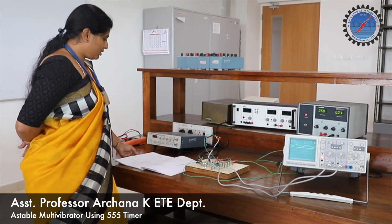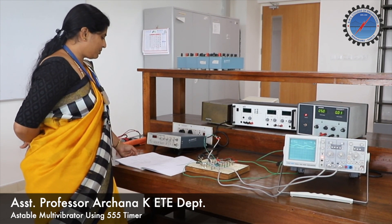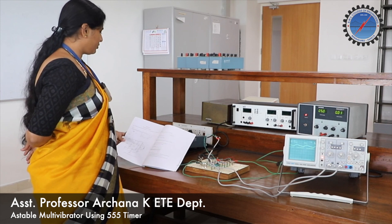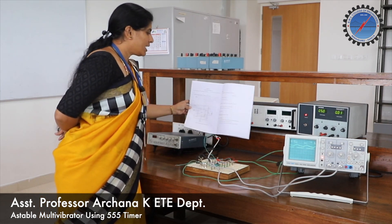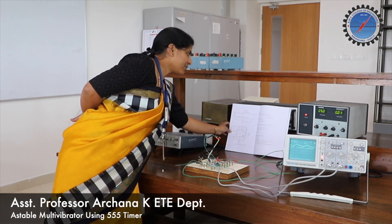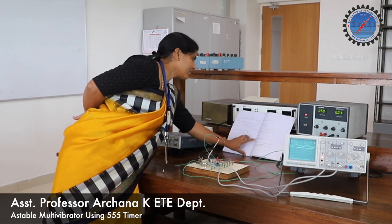Now we start with designing an astable multivibrator using 555 timer, designed for a frequency of 1 kilohertz. We will see different duty cycles: 25 percent, 50 percent, and 75 percent.